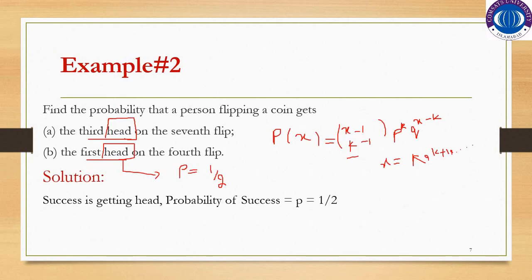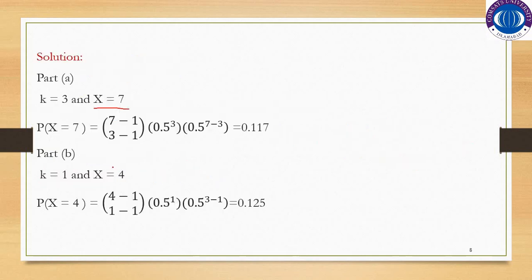For Part B, the person gets the first head on the fourth flip. So K = 1 and X = 4. By substituting these values into the probability mass function, we get 0.125, which is the probability of getting the first head on the fourth flip.